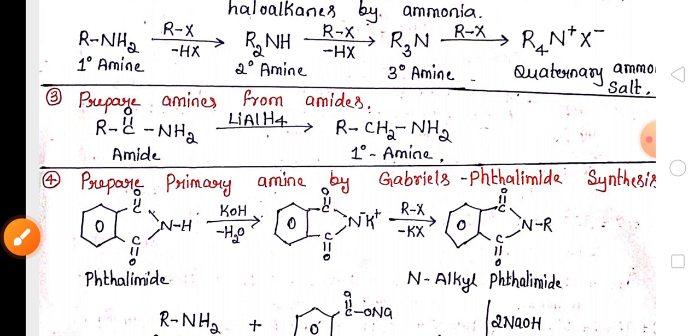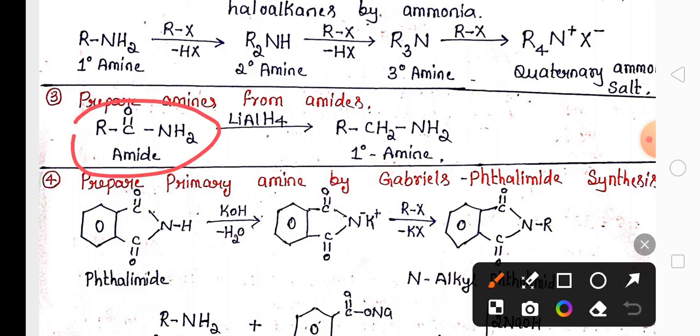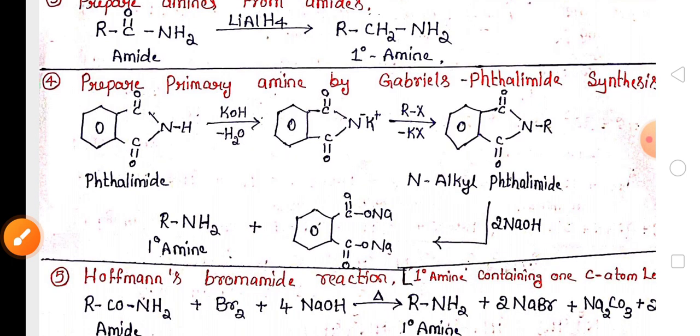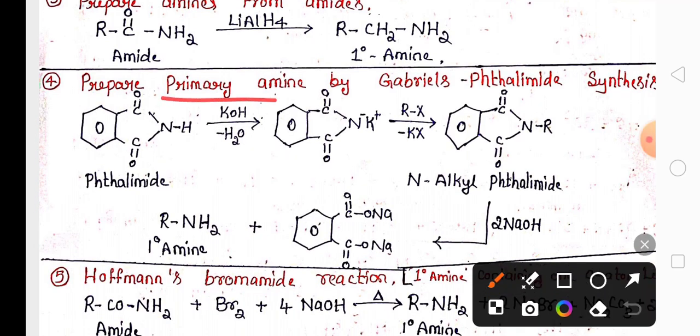One more method to prepare amine is from amide. When you do reduction of amide in the presence of lithium aluminum hydride, you will get amines.